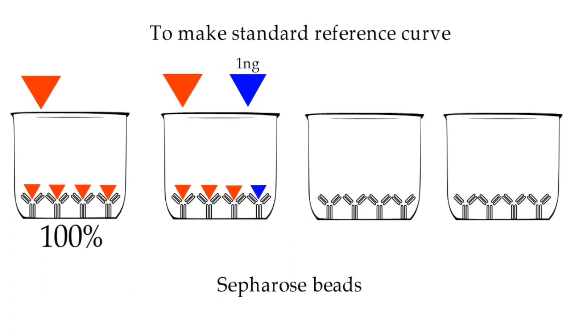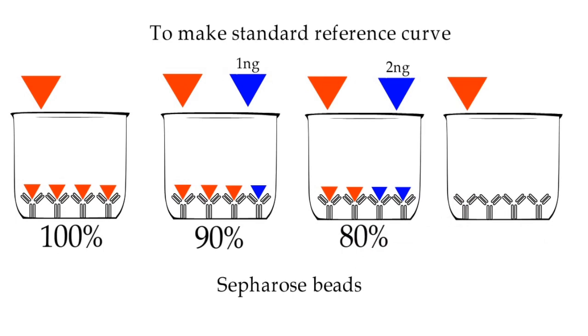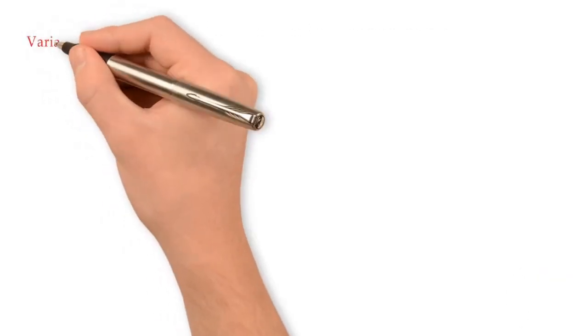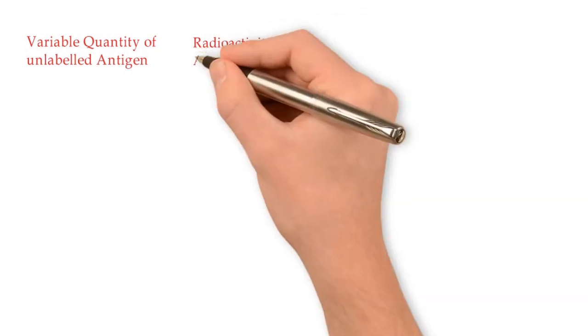Then after centrifuge and wash the bead and then check radioactivity of antigen-antibody complex retained in the beads. Let's say it's 90%. Then in third bead, with radiolabeled antigen X, add unlabeled antigen X say 2 nanograms, and after same procedure let's say radioactivity is 80%. With 3 nanograms of unlabeled antigen, radioactivity of antigen-antibody complex is 70%.